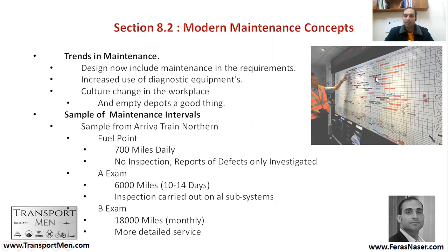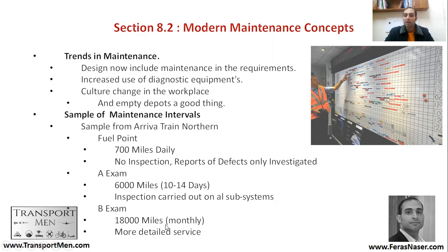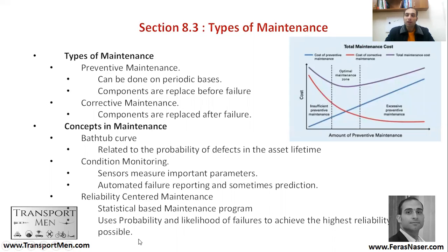To deliver a maintenance strategy, people develop maintenance intervals. As an example from Arriva Train Northern: they do a fuel point check every 700 miles, which happens daily, reporting any defects only if investigated. The A Exam happens after 6,000 miles, every 10 to 14 days, covering all subsystems. The B Exam happens after 8,000 miles monthly, with more detailed maintenance and inspection.